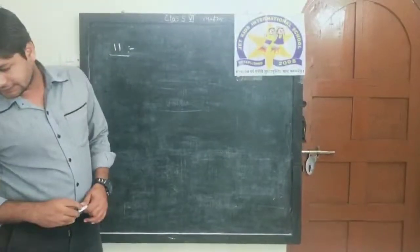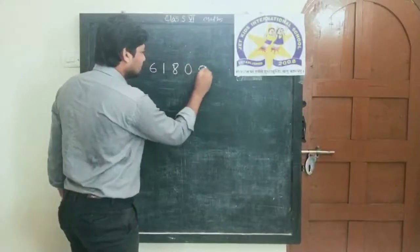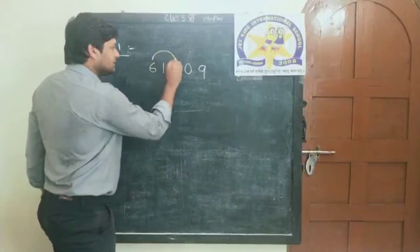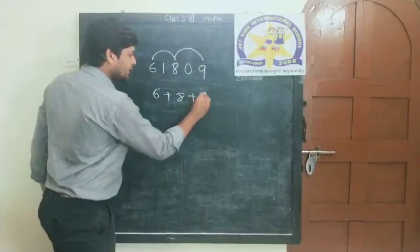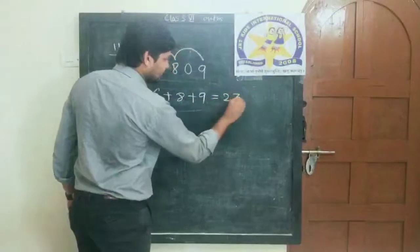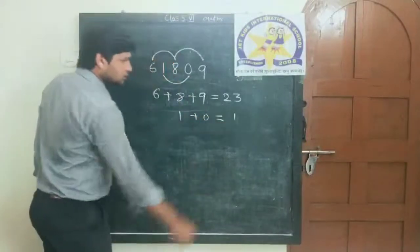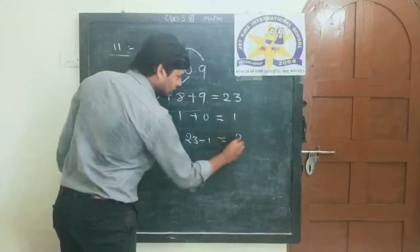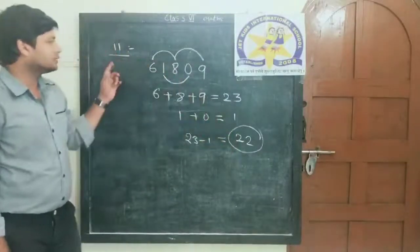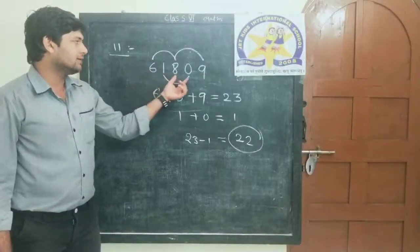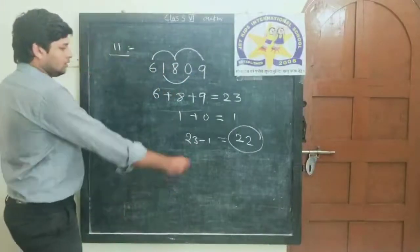Let me take the next example: 61809. Taking alternate digits — 6, 8, 9 — their sum is 6 plus 8 plus 9 equals 23. The other alternate digits are 1 and 0, so 1 plus 0 equals 1. The difference: 23 minus 1 equals 22. Is 22 divisible by 11? Yes, 22 is divisible by 11. That is why 61809 is divisible by 11. This is the divisibility test of 11.